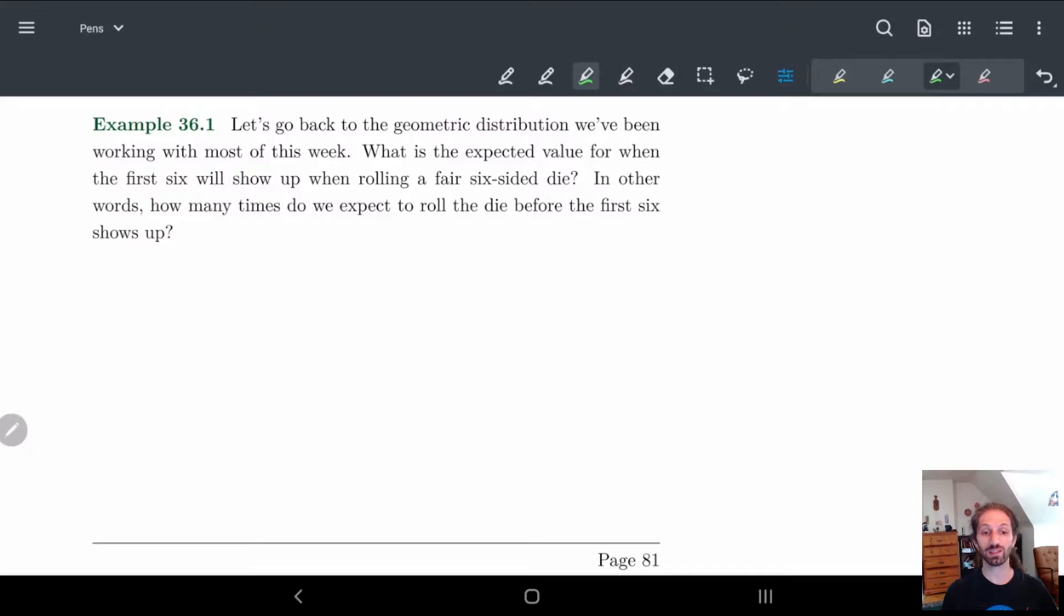So what's the expected value for when the first six will show up when rolling a fair six-sided die? So basically what I'm asking is, here's the example: we're basically doing the same setup, I roll a die until I get a six. How many rolls should I expect until I actually get that six?